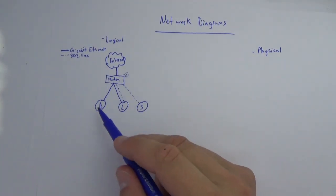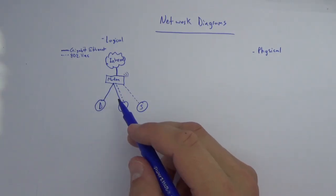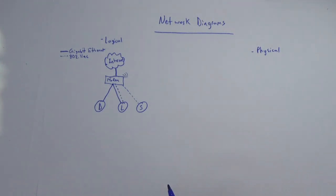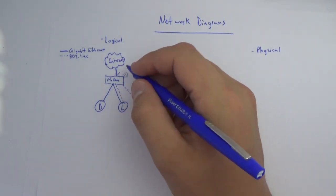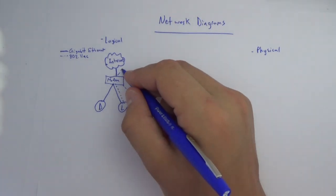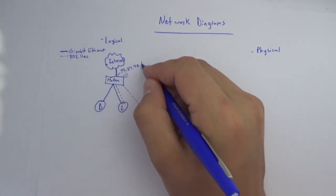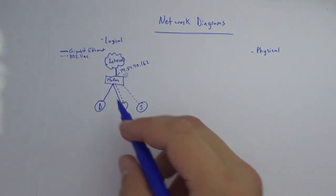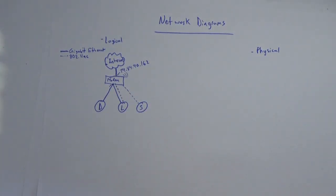Now we've shown how things are logically connected, but the next thing we need is how things are logically addressed — and that's where we get into IP addresses. On the internet side, this modem probably has some form of a public address, something like 162.x.x.x. On the inside, the modem is also going to have an internal IP address.